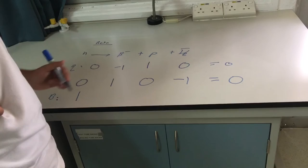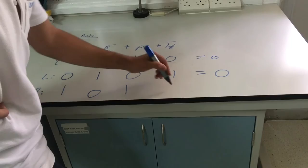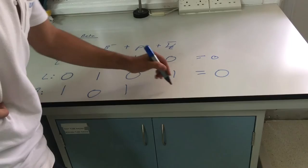Finally, if we look at the baryon number, since a neutron is a baryon, this is one. Since a beta minus particle is not a baryon, it's zero. Since a proton is a baryon, it's one. And the neutrino is not, so it's zero. So this number is also conserved. Thus, this can take place. Wow, that's just so interesting. And that's all, folks.